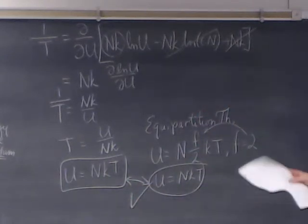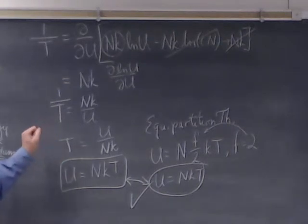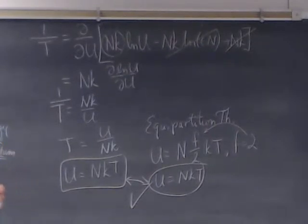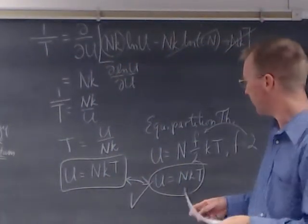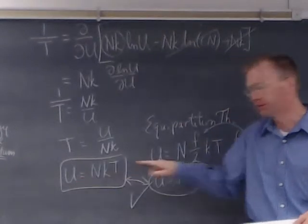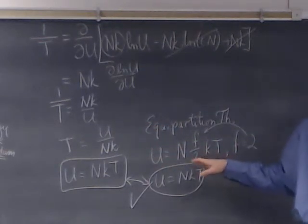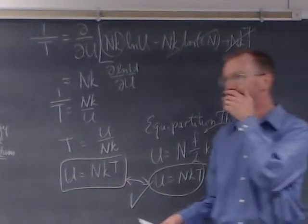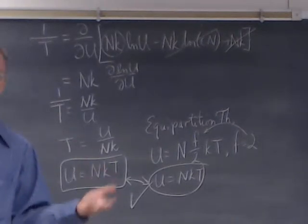We have just re-derived the energy of an Einstein solid at the high temperature limit from our definition of temperature. We had to know the microscopic structure, but we didn't need the equipartition theorem — we came up with it from a different route and confirmed the equipartition theorem, which makes sense because the laws of physics must be consistent.